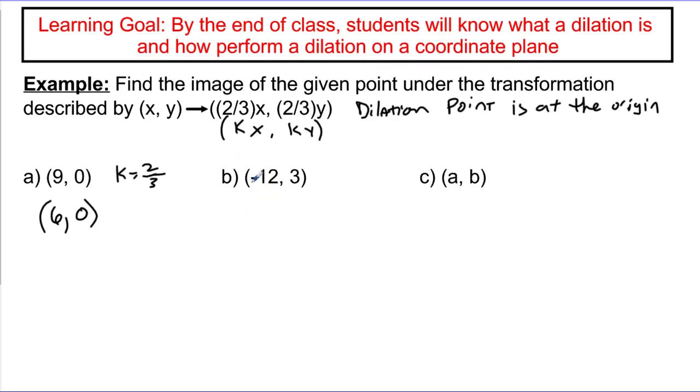I can do that for any other point. So if I did negative 12 times two-thirds, if you're not sure about how to do that without a calculator, remember multiplying a whole number times a fraction looks like this. I just say this is negative 24 on the top over 3 on the bottom. Well, negative 24 over 3 is negative 8. And I can do the same thing with positive 3 over 1 times two-thirds. This looks like positive 6 on the top divided by 3 on the bottom. Well, positive 6 over 3 is 2. So I would say that the point negative 12, 3 becomes the point negative 8, 2 after a dilation from the center at the origin of two-thirds.